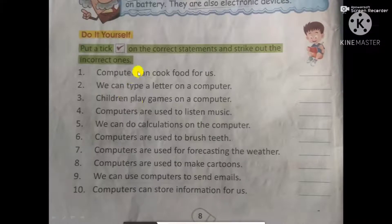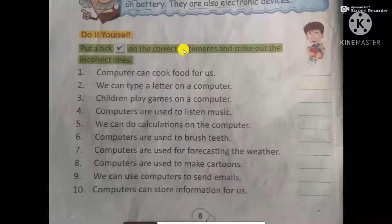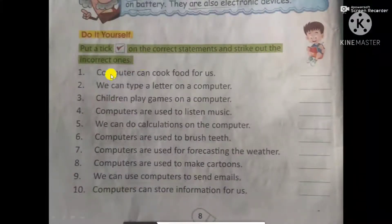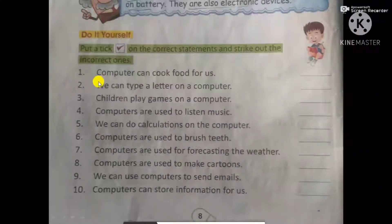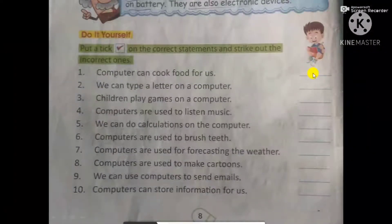Now let's do the exercise given on page number 8. You have to put a tick on the correct statement and strike out the incorrect one. First: can a computer cook food for us? No — put a cross.